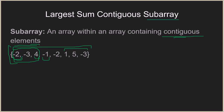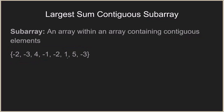Now coming to the problem of largest sum contiguous subarray: given this array, you have to find which subarray has the largest sum, where all elements in the subarray must be contiguous. For example, minus two and minus three and four sum to minus one, which is negative. But five and minus three sum to two, which is greater than minus one. The solution is basically the maximum sum achievable by adding contiguous elements.